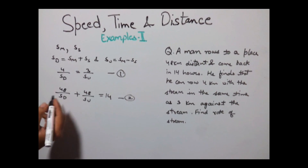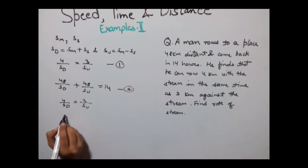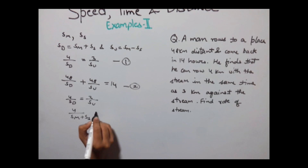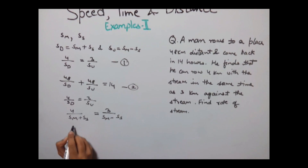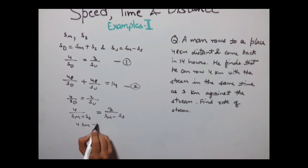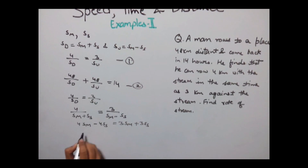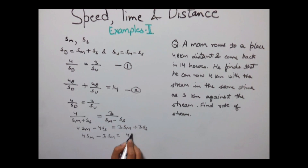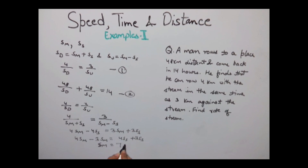Now we will solve the first equation. 4 divided by downstream equals 3 divided by upstream, i.e., 4 divided by (SM plus SS) equals 3 divided by (SM minus SS). Cross multiplying gives 4SM minus 4SS equals 3SM plus 3SS, which simplifies to SM equals 7SS.